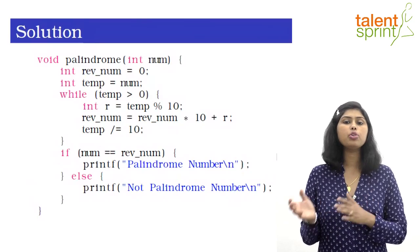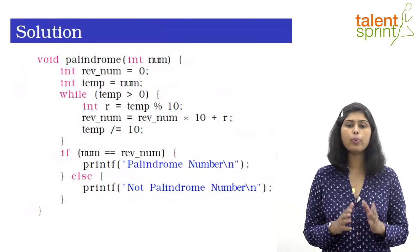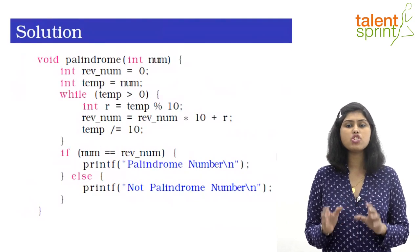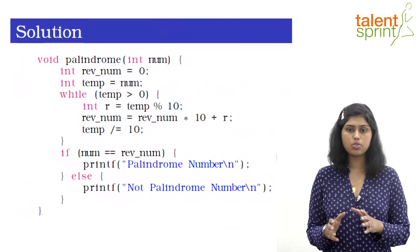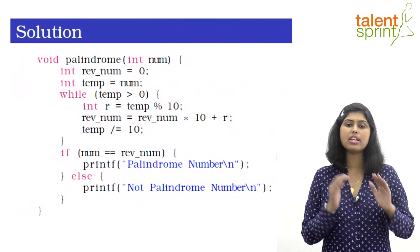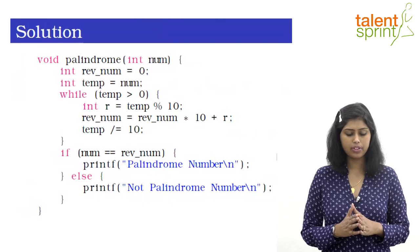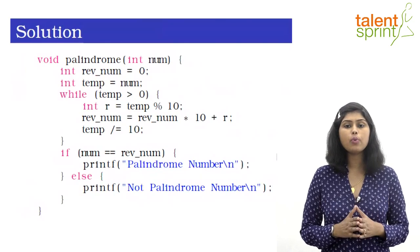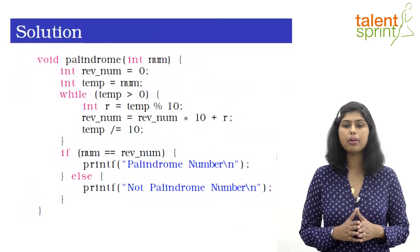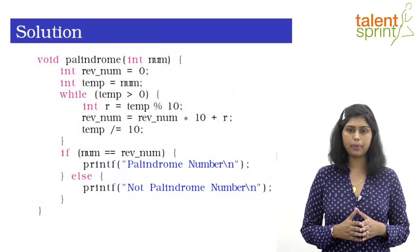Once we have the reversed number, we simply check using an if-else construct if the reversed number is equal to the input number. If it is equal, we print 'palindrome number,' and if not, we say 'not a palindrome number.' Now I would like to bring in the concept of functions here.